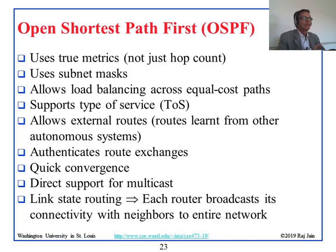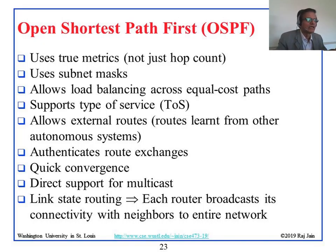Quick convergence means it doesn't take very long before we know the cost to the whole world. Compare this to distance vector where it took 16 rounds before both routers found out that a link broke. In the Bellman-Ford table example it took only five rounds to converge to the final solution — that is quick convergence.